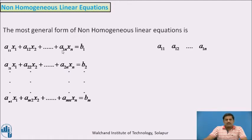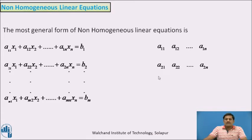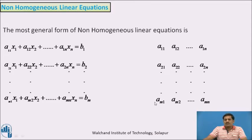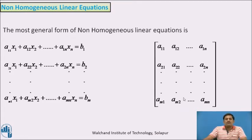From the first equation, when I collect all the constants from the left-hand side, I will get a11, a12, and so on up to a1n. From the second equation, the coefficients are a21, a22, and so on up to a2n. Continuing up to the last equation, we get am1, am2, amn. We insert square brackets, and this is now looking like a matrix.